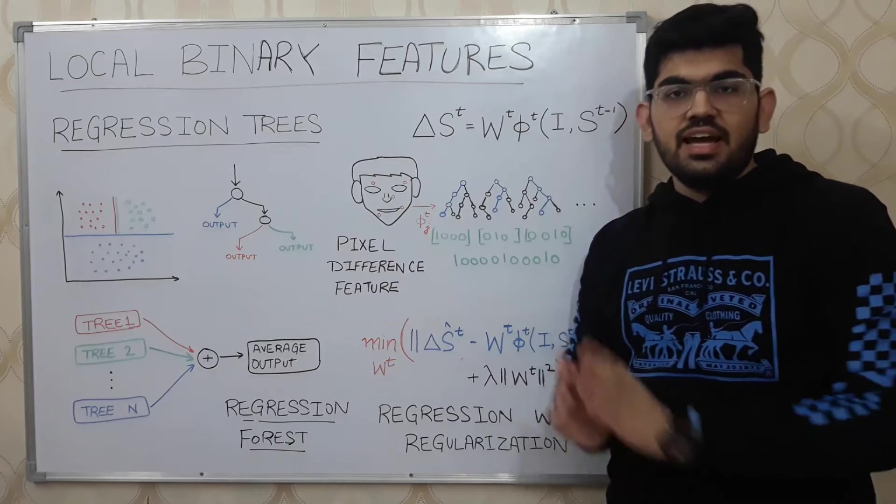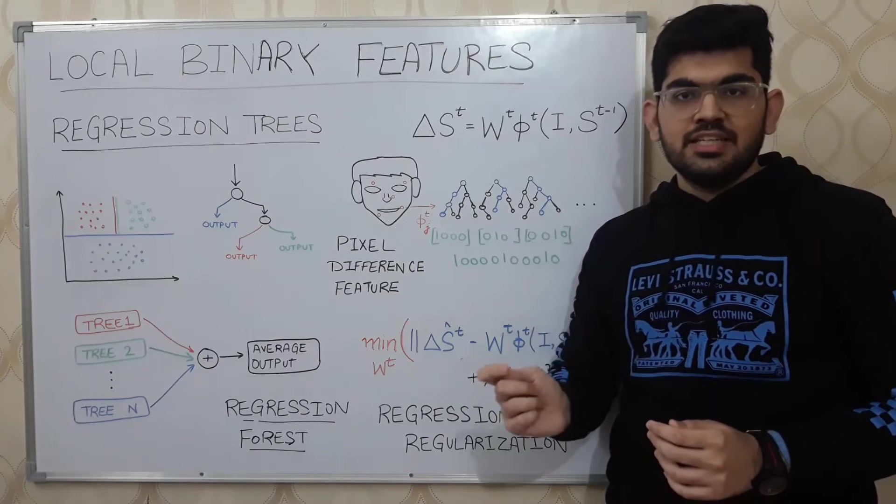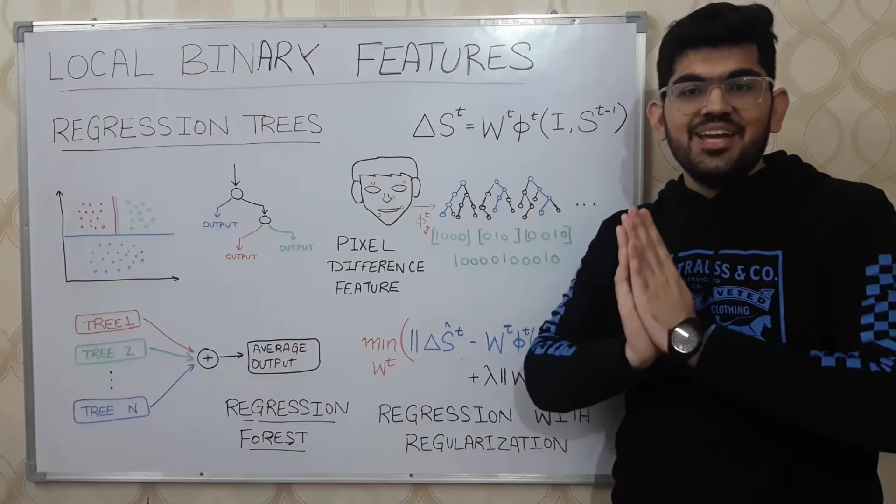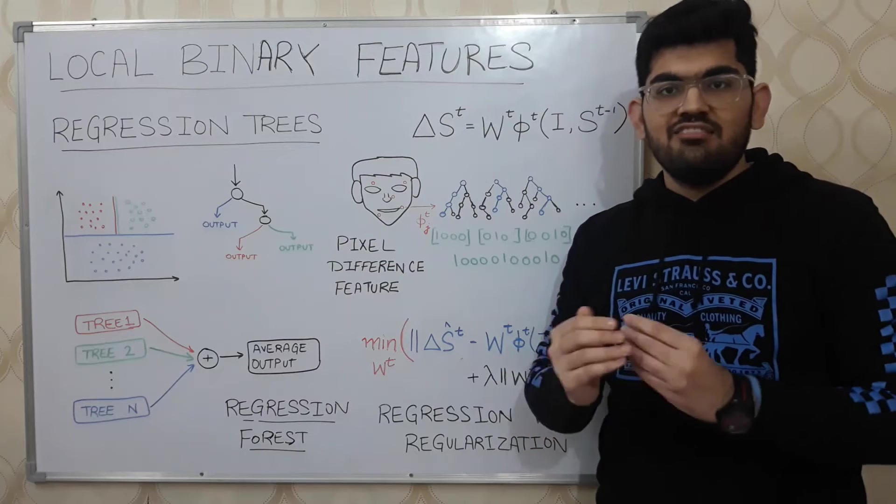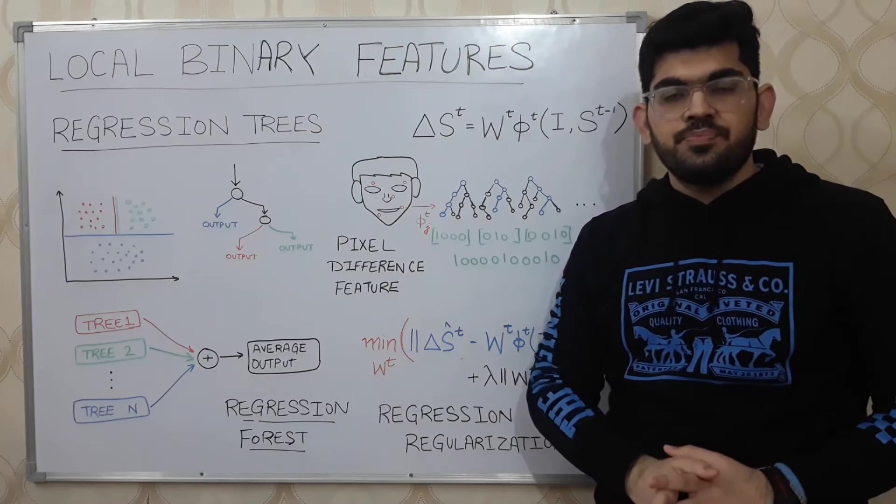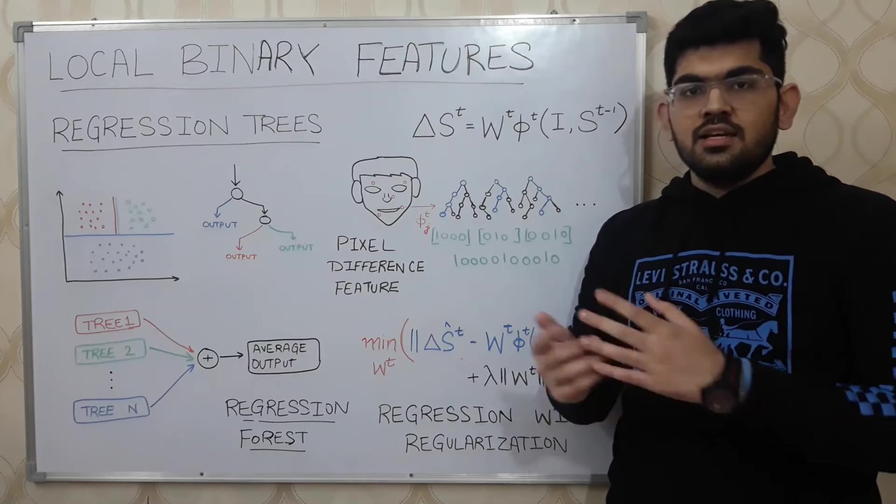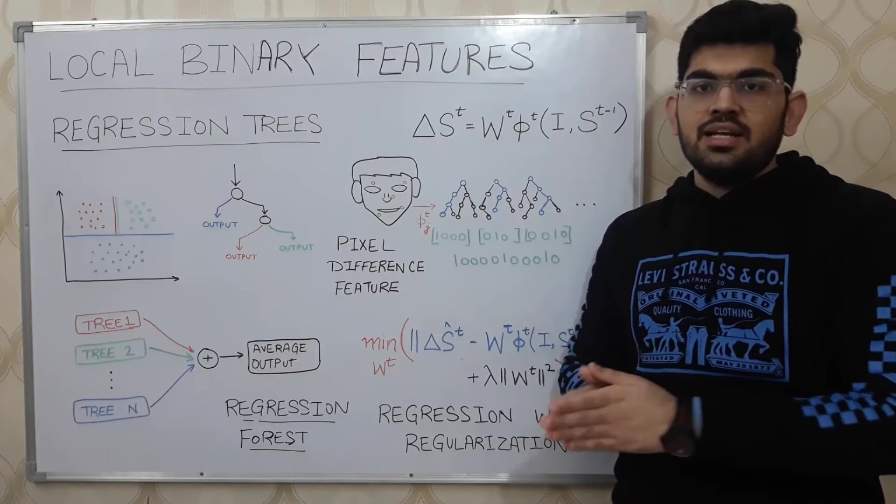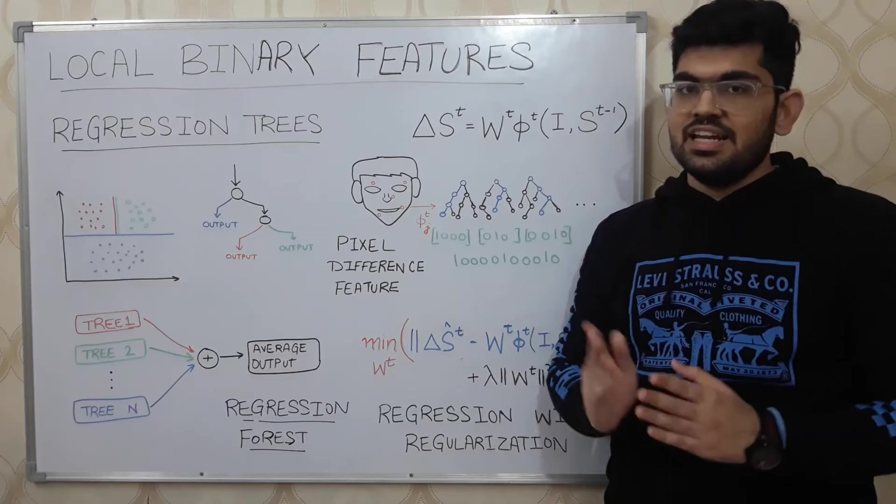Now let us discuss how we learn and calculate these functions W and Phi. Since W is a simple matrix multiplication, we can use regression techniques to learn this matrix W. In machine learning language, regression simply refers to learning to predict numerical values. One particular example of regression would be house price prediction. Given the features of a house like the number of bedrooms, the locality and the closeness to market, we can use these features to predict how much that house would cost. Predicting such a numerical value is what constitutes the regression problem.